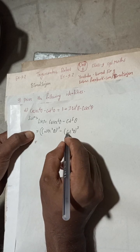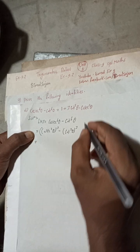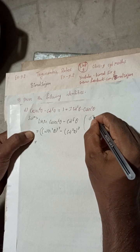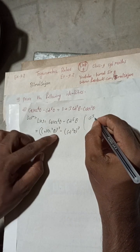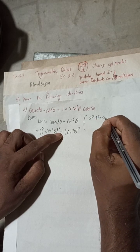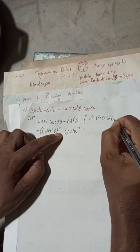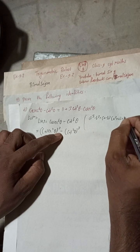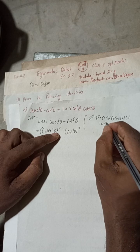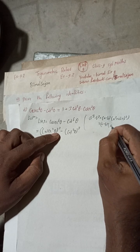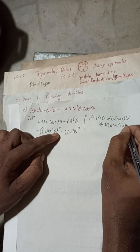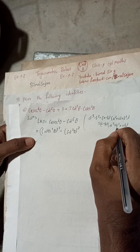This is the a³ minus b³ formula. The formula for a³ minus b³ is: (a minus b)(a² plus b² plus ab). We will write it as (a minus b)(a² plus b² plus ab) for the easiest simplification.